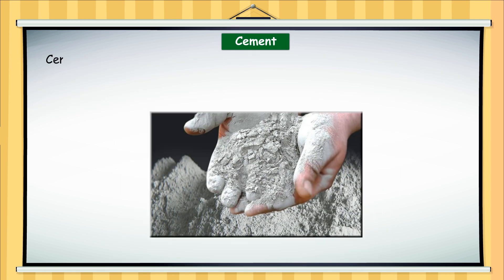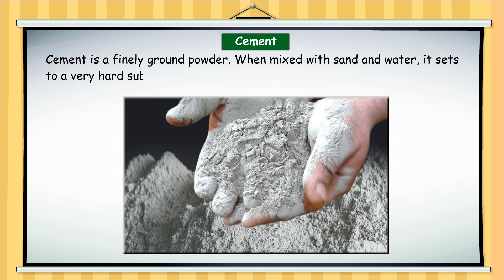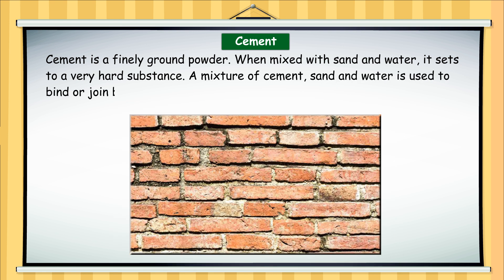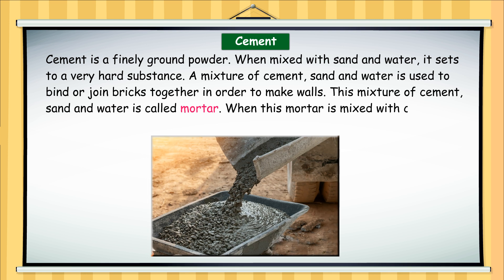Cement is a finely ground powder. When mixed with sand and water, it sets to a very hard substance. A mixture of cement, sand and water is used to bind or join bricks together in order to make walls. This mixture of cement, sand and water is called mortar. When this mortar is mixed with crushed stones, it is called concrete.